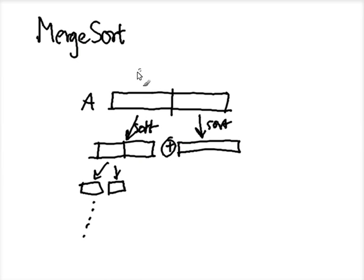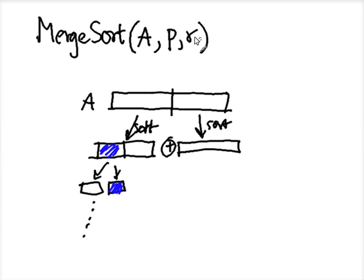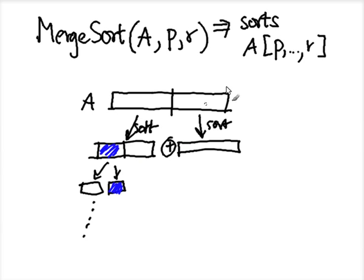Let's describe the algorithm. Merge sort will take an array A, but we need some way to specify which part of the array we want to sort. So instead of just passing array A, we introduce two more parameters P and R. The idea is that merge sort on A with parameters P and R will sort array A from position P to R.